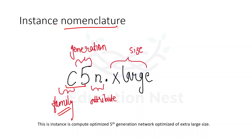How does the generation change? If any hardware upgrade is made in the backend servers or data centers, or the servers are replaced by more advanced ones, then the generation of that EC2 instance changes. It is suggested to always use the newer generation. This is compute optimized fifth generation with 'n' as the attribute — 'n' represents network optimized.